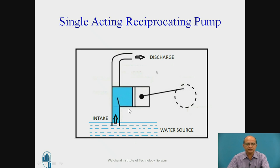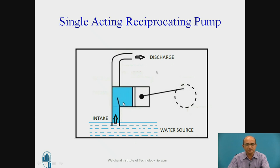One disadvantage is that there is an intermittent supply because water is sucked inside the cylinder only during the stroke from the inner dead center to the outer dead center. During that stroke, there is no delivery to the delivery pipe. So for half a rotation there is suction, and for the remaining half rotation there is discharge. This results in an intermittent supply, and the discharge rate is lower compared to the double acting reciprocating pump.